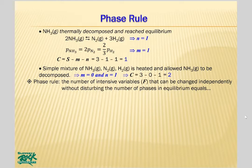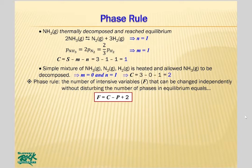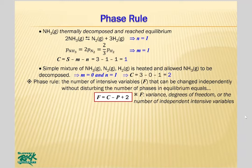The phase rule allows us to determine the number of intensive variables F that can be changed independently without disturbing the number of phases in equilibrium. The mathematical expression of the phase rule is F equals C minus P plus 2. F stands for the variance, or the degrees of freedom, or the number of independent intensive variables.